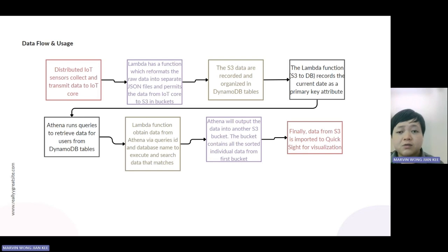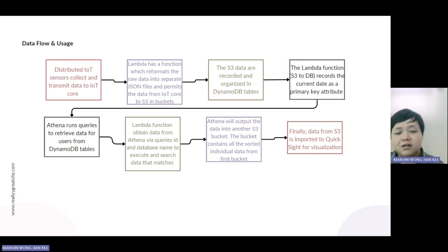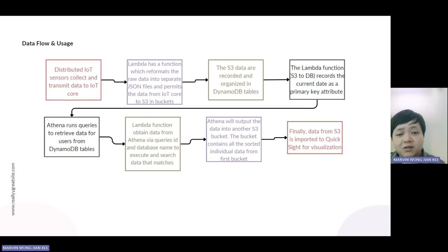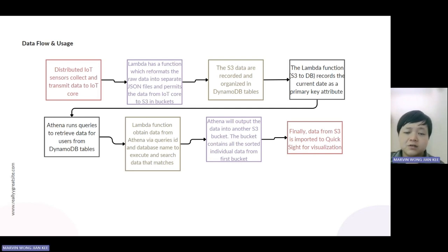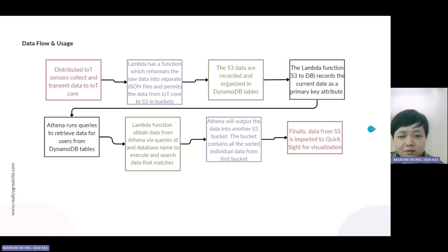Next, the Lambda function obtains the data resulting from Athena via queries and the database name to execute and search data that matches the specific query provided. Athena then outputs the data from the query results into another S3 bucket, which contains all the individual data sorted into one file. Finally, the data from the second S3 bucket will be imported to QuickSight to visualize and analyze it.